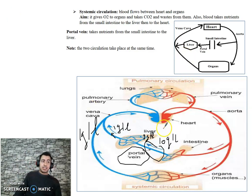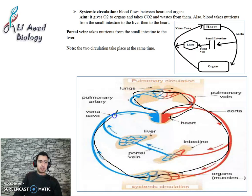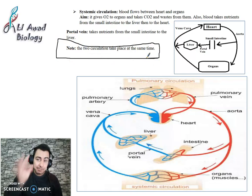In this figure here, you see what I'm explaining. The two circulations: the pulmonary circulation here and the systemic circulation. The systemic and pulmonary circulations occur at the same time, they are synchronized.